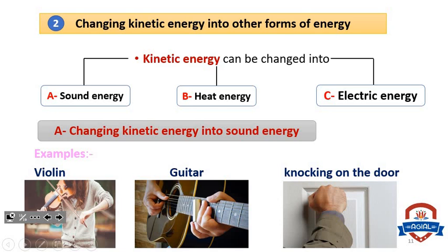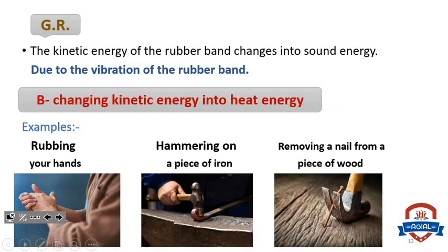For example, in a violin, kinetic energy changes into sound energy. Number two: guitar and knocking on the door. Give reason: The kinetic energy of the rubber band changes into sound energy due to the vibration of the rubber band.